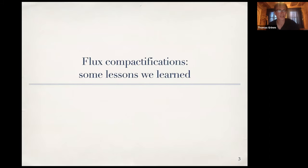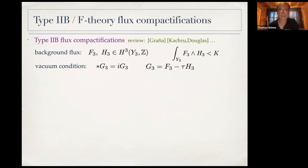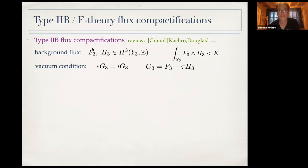Let me start with flux compactifications and some general lessons learned about them in recent years. The setting: we consider type IIb string theory compactified on a Calabi-Yau manifold Y3. Instead of one charge, we choose two quantized three-form charges in a quantized cohomology group, satisfying a condition that their batch product is bounded. These quantized fluxes with bounded batch product are called background fluxes.